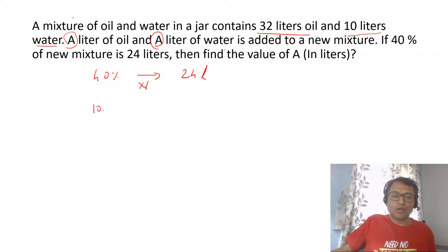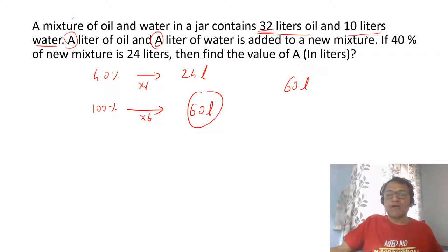You get 60 liters. 40 percent is 24, so 100 percent will be 60. Total is 60, from which 32 and 10 were already present, so minus 42. What we added is 18 liters. 42 was already present, so what we added is 18, and 18 is 2A because we added 2A liters. Then A will automatically be 9 liters, so the answer will be 9.